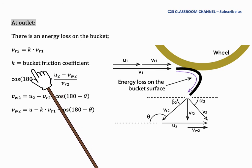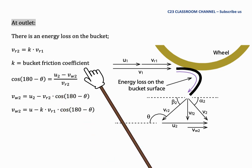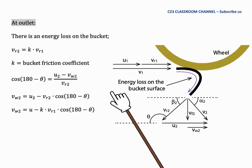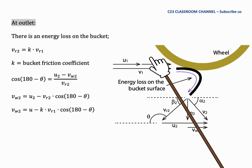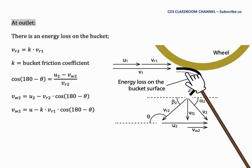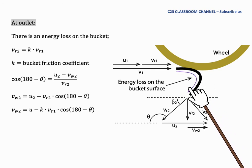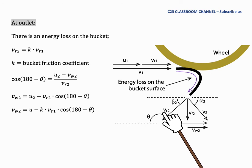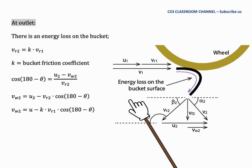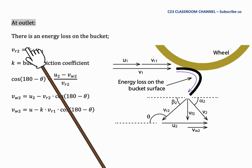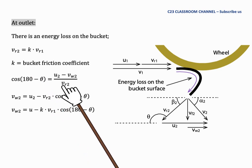K is the bucket friction coefficient. For example, if VR1 equals 10 m/s, because it flows along the blade surface, the output VR2 at the outlet will be less than 10 m/s. So we multiply VR1 by a coefficient K to represent the reduced value of VR2.